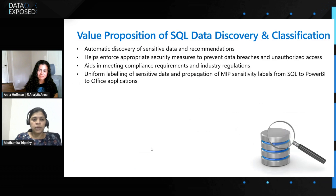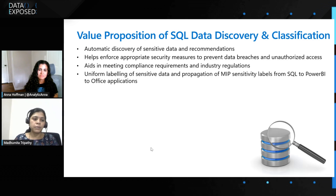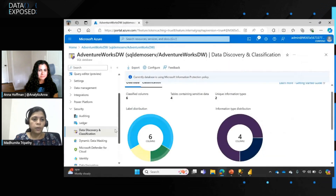The value propositions here are: once you identify and classify where your sensitive data lies, that acts as a foundation for your next security measures. You can think of implementing encryption or enforcing better access control mechanisms, because you know that there are credit card details or SSN numbers in the database, and you can control how that data is shared with vendors or other teams. It improves the overall security posture for your database and organization, and you can meet compliance requirements and data privacy standards and regulations. Let's go to the Azure portal and see it in action.